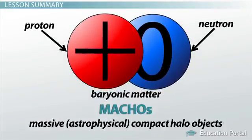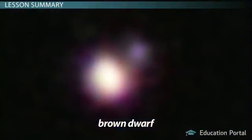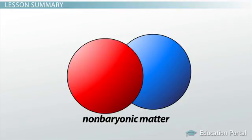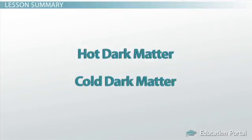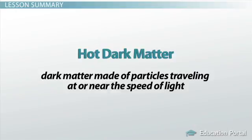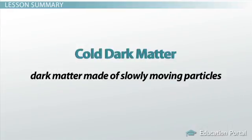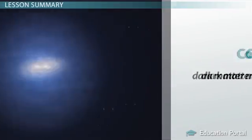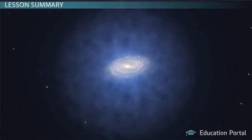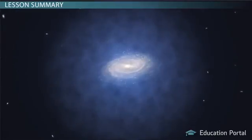But more than likely, most dark matter is actually non-baryonic dark matter, or exotic matter that's not made of protons and neutrons. This type of dark matter can be hot or cold dark matter. Hot dark matter is dark matter made of particles traveling at or near the speed of light. Cold dark matter refers to dark matter made of slowly moving particles. Astronomers think most dark matter is cold dark matter, as this kind of matter would allow for matter to clump together to form galaxies.